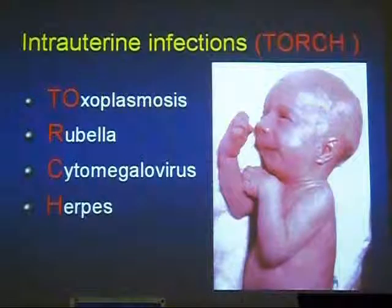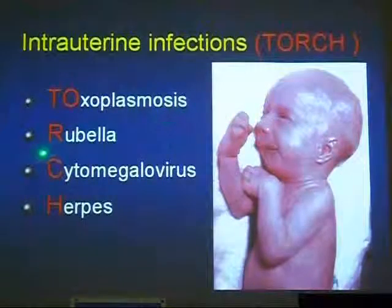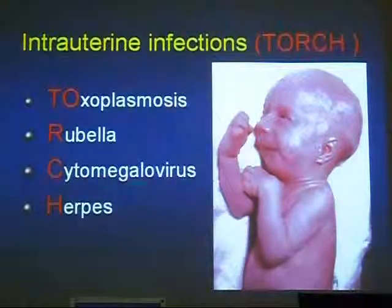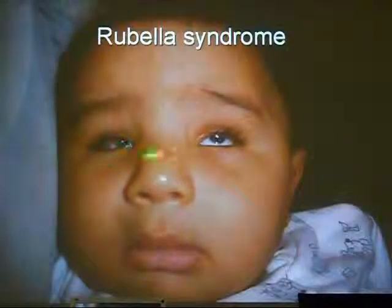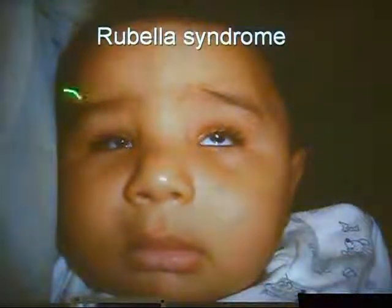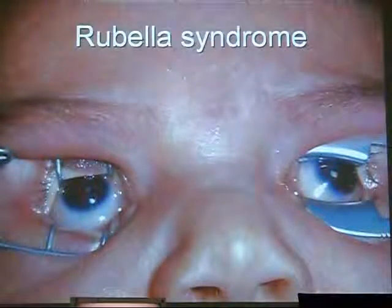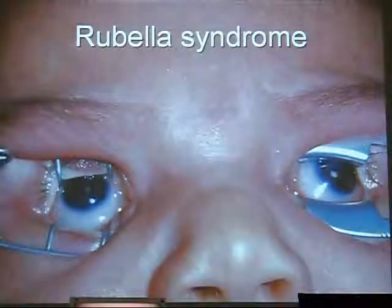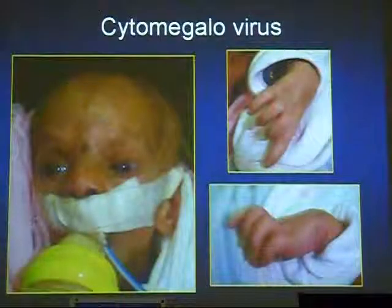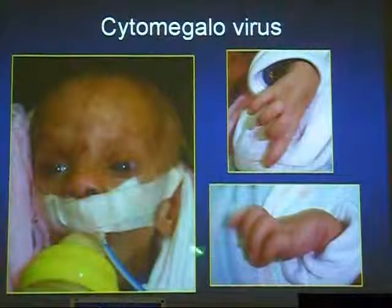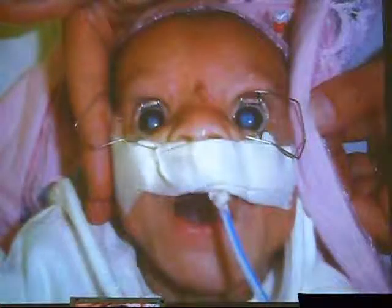Regarding intrauterine infections, the most common are the TORCH diseases — TO for toxoplasmosis, R for Rubella, C for cytomegalovirus, and H for herpes. If a baby has small eyes (microcornea), microphthalmos, together with hearing defects and heart problems, suspect Rubella syndrome. The pupil is pinpoint and undilatable, and the cataract is purely white nuclear cataract. Suspect cytomegalovirus infection when a baby presents with skeletal abnormalities, congenital cataract, failure to thrive, jaundice, and hepatosplenomegaly.